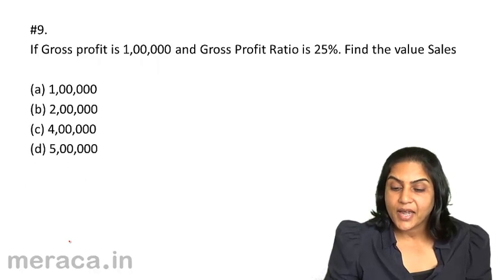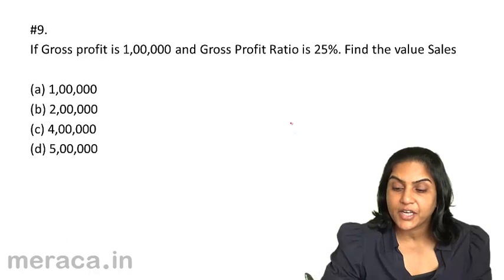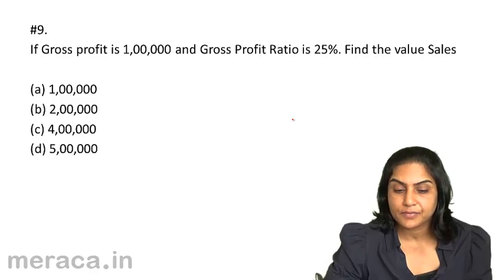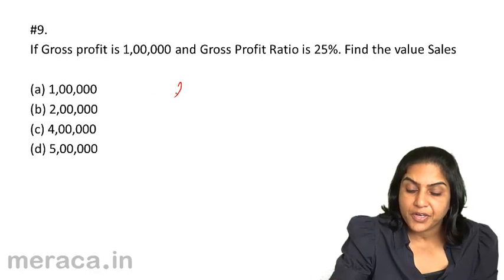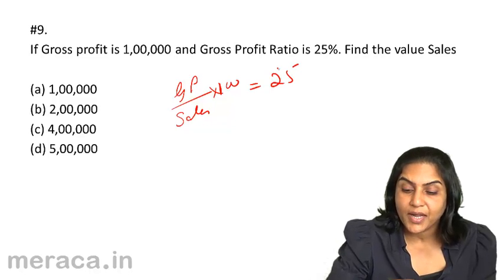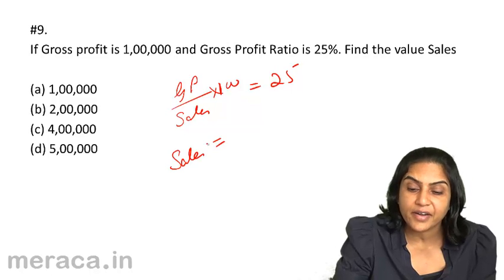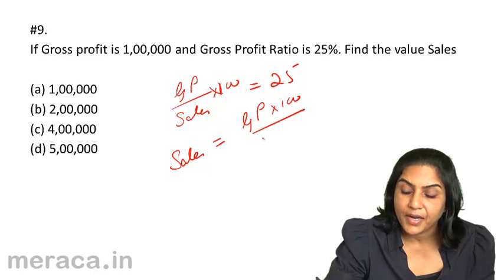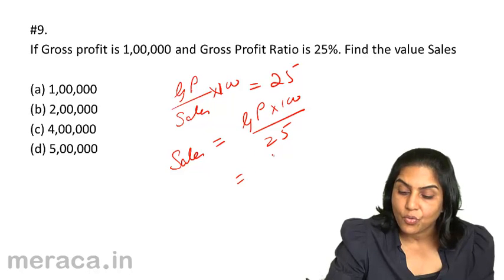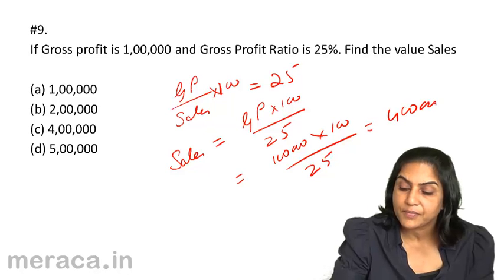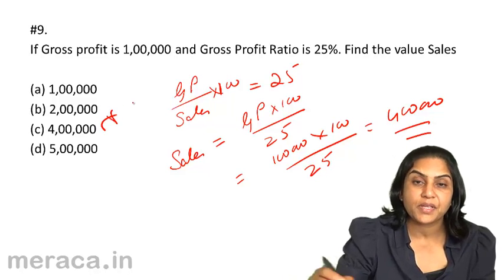If gross profit is Rs. 1,00,000 and gross profit ratio is 25%, find the value of sales. Options: A. 1,00,000; B. 2,00,000; C. 4,00,000; D. 5,00,000. Gross profit ratio = (Gross profit / Sales) × 100 = 25%. Gross profit is Rs. 1,00,000. Rearranging: Sales = Gross profit × 100 / 25 = 1,00,000 × 100 / 25 = Rs. 4,00,000. The correct answer is C, Rs. 4,00,000.